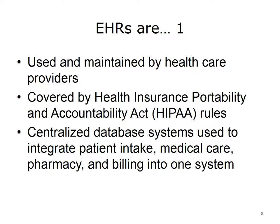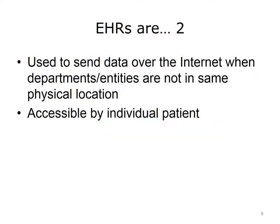EHRs use centralized database systems to integrate functions such as patient intake, medical care, and pharmacy billing into one large database system. Departments and other entities might not be in the same physical location, so patient data must often travel over the internet. Any time the internet and data are combined, an element of risk is introduced. One reason data has to travel over the internet is that when a doctor's office bills an insurance company, some of the patient's medical information must travel over the internet. Through the use of EHRs, people can view their own health record, taking ownership of its contents, ensuring accuracy, and even providing content by adding comments for their doctors to read.